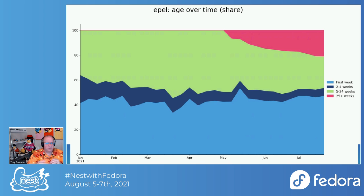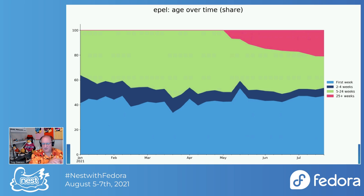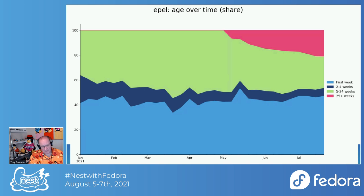The other interesting thing is the two-to-four-week range — basically one month. In my mind I picture virtual machines or cloud machines that do a complete refresh once a month: they wipe the machine clean and spin up a new one. And then we have our longer-lasting machines. I believe this red is only coming in around May because that's how long it took before we had 25 weeks of reporting with this new method.